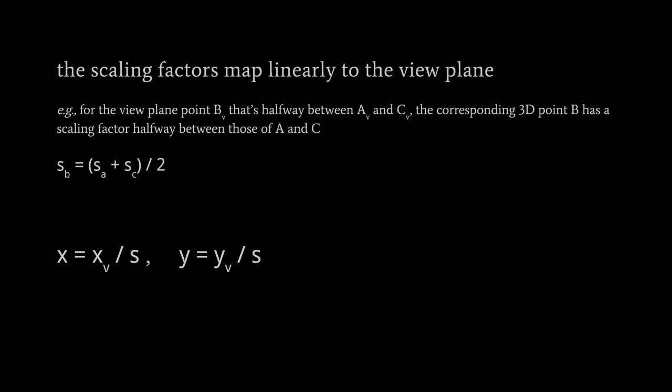However, happily, it turns out there is a linear relationship between the so-called scaling factors and the points on the viewplane. By scaling factor I mean the ratio of the focal length to Z, which is what we multiply the X's and Y's of the 3D coordinates by to get the corresponding points on the viewplane. So for a point B on the viewplane that's halfway between A and C on the viewplane, the scaling factor for the corresponding 3D point B is halfway between the scaling factors for A and C.